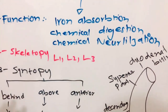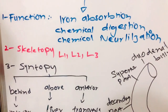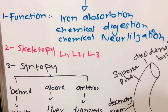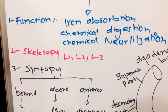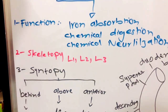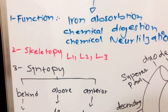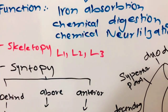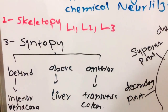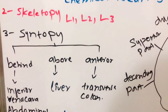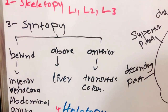Now we will discuss the skelotopy of the duodenum. Skelotopy is the relation of the small intestine to the bones. The skelotopy of the duodenum is L1, L2, and L3 — lumbar 1, lumbar 2, and lumbar 3.